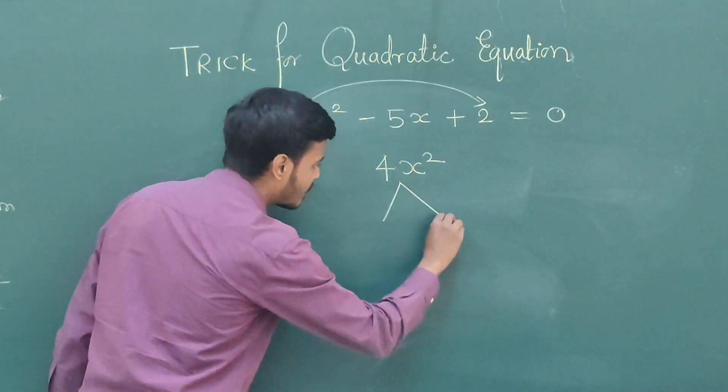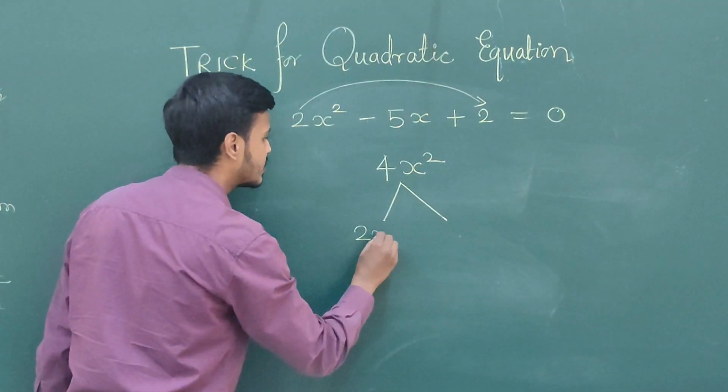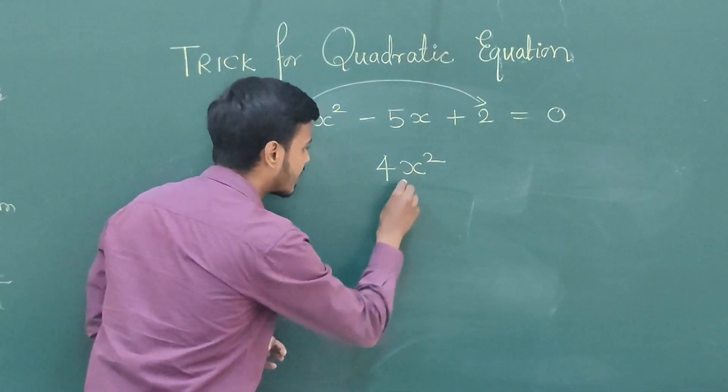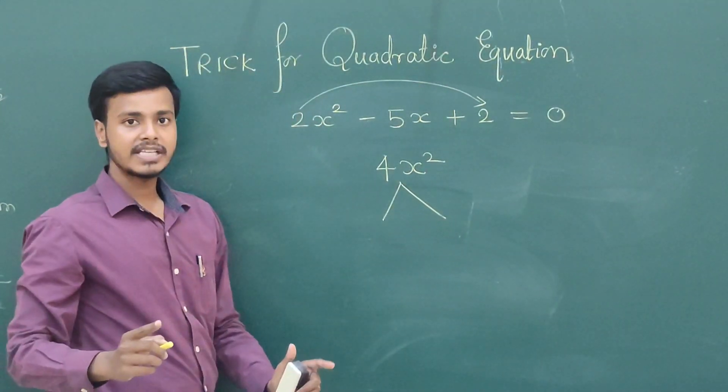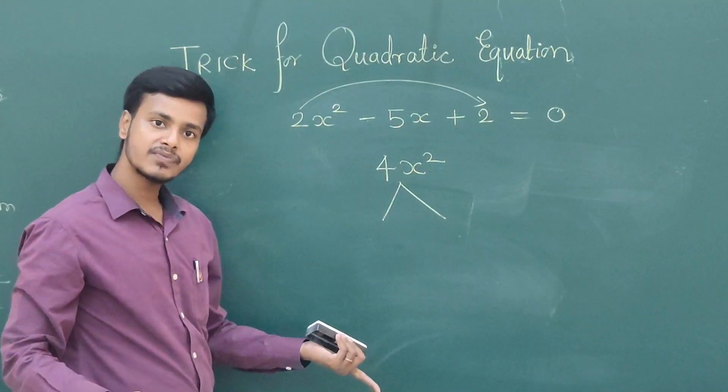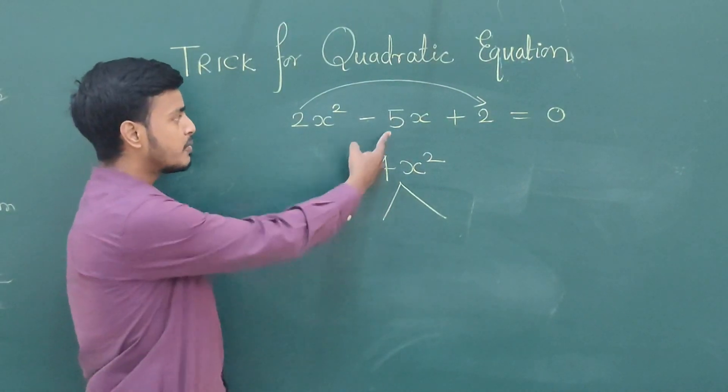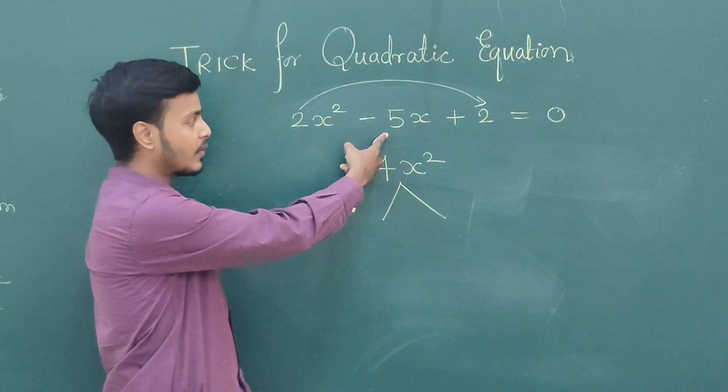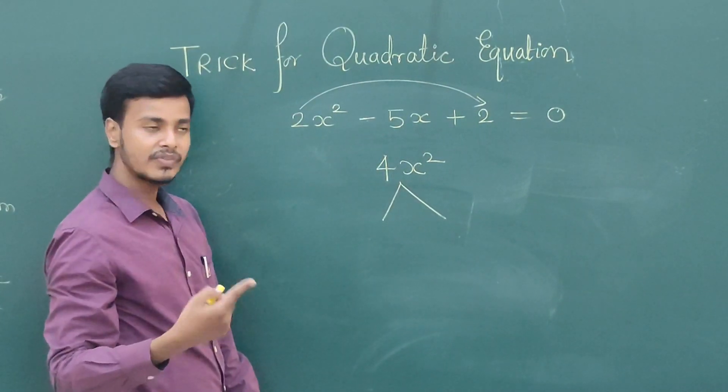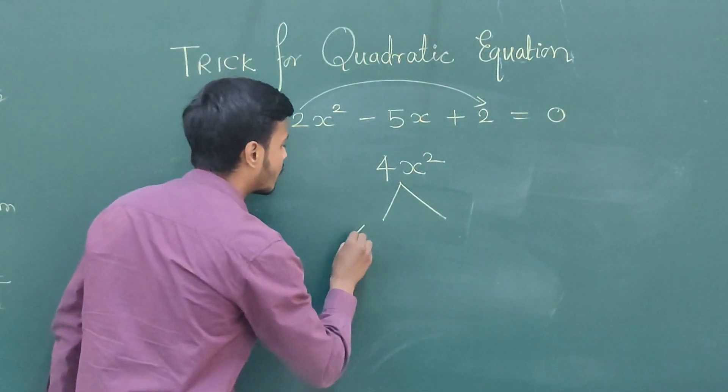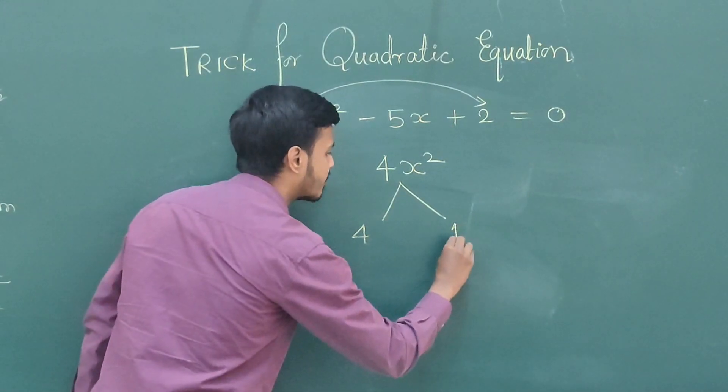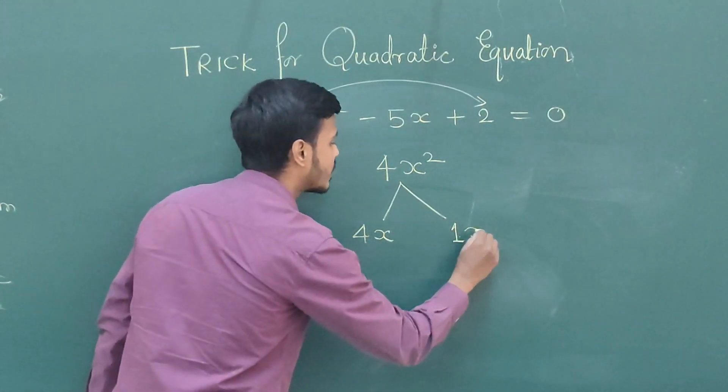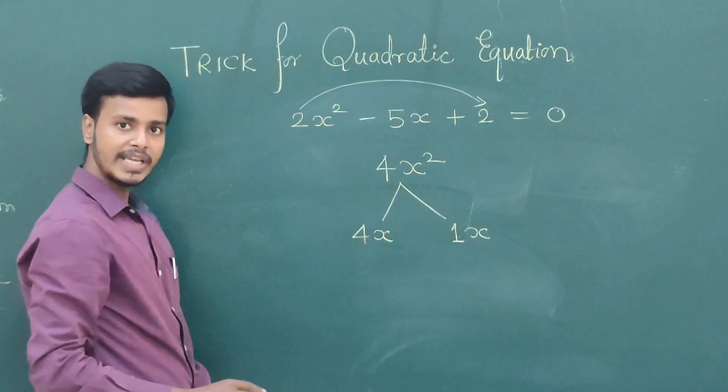Now the factors of 4x squared. See, I can take factors as 2 and 2 is 4, or I can take factors as 4 and 1 is 4. 2 plus 2 or 2 minus 2 will give you 0 or 4. So we cannot take 2, 2. We can take factors as 4 and 1.